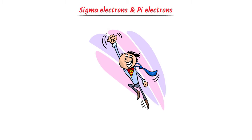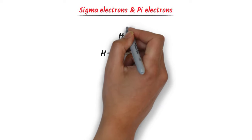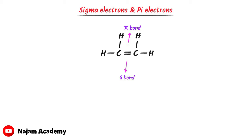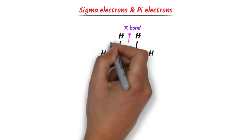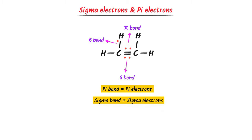Firstly, I will teach you the concept of sigma electrons and pi electrons. Without learning some of these basic concepts, you will not be able to learn hyperconjugation. Consider this organic compound. We know that in a double bond, there is one pi bond and one sigma bond. In the pi bond, there exist pi electrons, while in the sigma bond, there exist sigma electrons. This single bond between hydrogen and carbon is also a sigma bond, which contains sigma electrons. Remember: pi bond contains pi electrons and sigma bond contains sigma electrons.